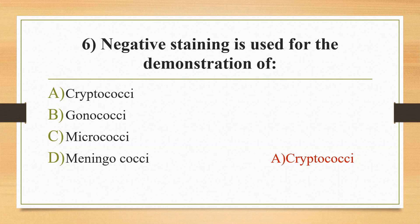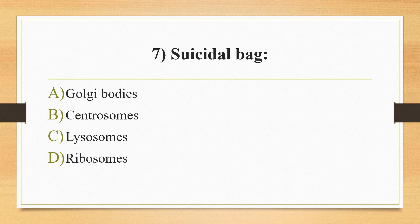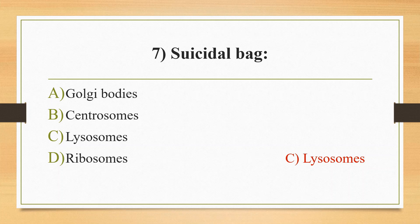Seventh question: suicidal bag — option A Golgi apparatus, option B centrosomes, option C lysosomes, option D ribosomes. The answer is option C, lysosomes. Lysosomes are capable of digesting nucleic acids, polysaccharides, fats, and proteins. Lysosomes can also digest or damage their own cells using their own enzymes, leading to cell death — a process called autolysis. Hence, lysosomes are called the suicidal bag.